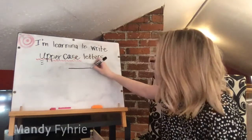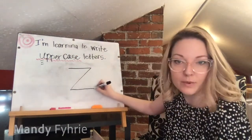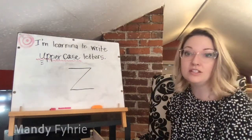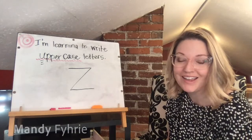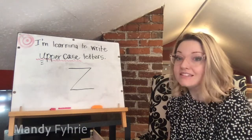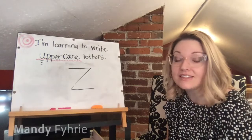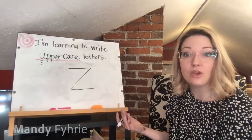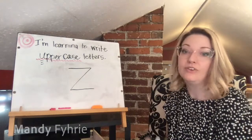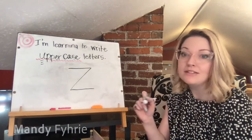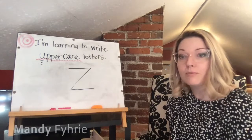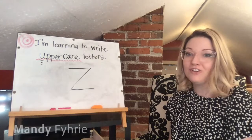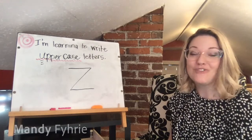Capital Z looks just like a lowercase z but big: little line across, slide backwards, little line forwards. These letters just need practice and you'll get it soon enough. These were all uppercase — or capital — letters. I went through this quickly as a review, so please feel free to pause, grab your paper or whiteboard and marker, and practice as much as you need. Have a wonderful afternoon — see you very soon!